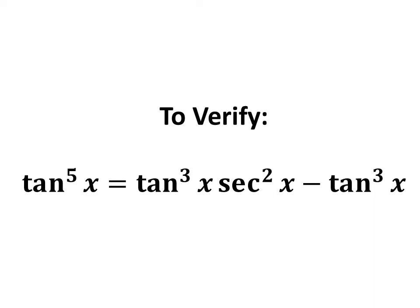In this video, we will learn to verify the trigonometric identity tan^5(x) = tan^3(x) sec^2(x) - tan^3(x).